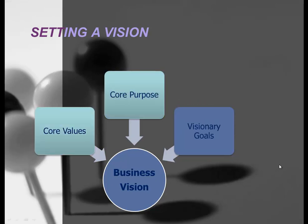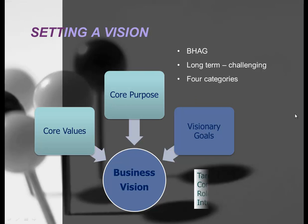The third point is visionary goals, which takes more planning muscle. Visionary goals are lofty objectives — a future milestone that may require a decade or more to achieve. One way to sum this up is a BHAG — a Big, Hairy, Audacious Goal. This is not something that can be achieved in the short term; it's longer term and challenging. Your organization may have only a 50% chance of even meeting this goal, so these are different from objectives. BHAGs typically fall into one of four categories.